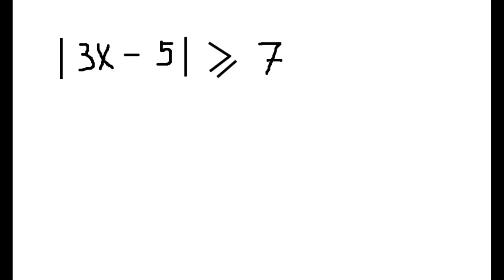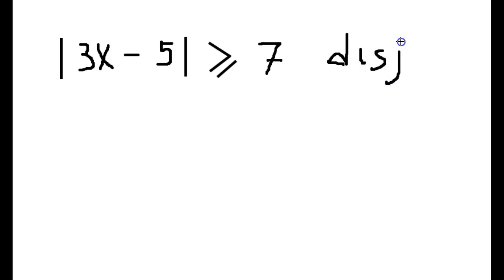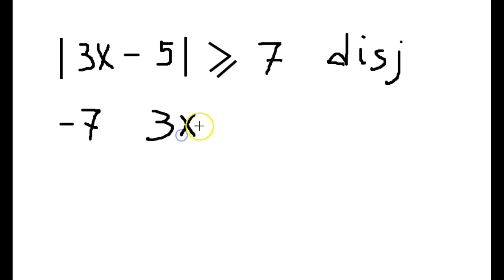Now suppose that instead of the previous situation, we have something very similar: the same absolute value expression, but the only change is that instead of a less than or equal to symbol, we have a greater than or equal to symbol. This means we are now dealing with a disjunction. We'll still set up the three-sided inequality: negative 7 on the far left, 3x minus 5 in the middle, and positive 7 on the far right.